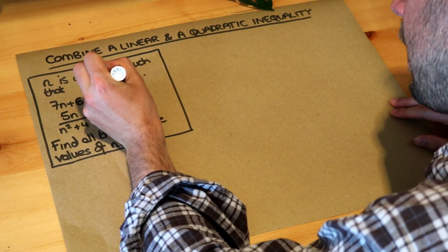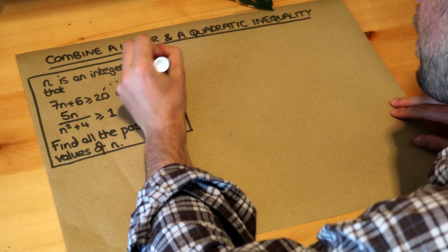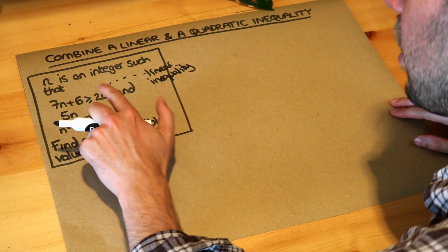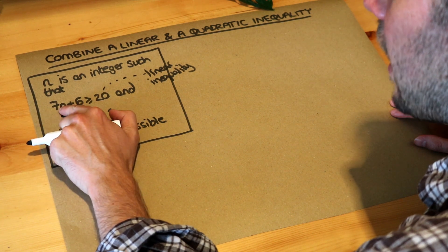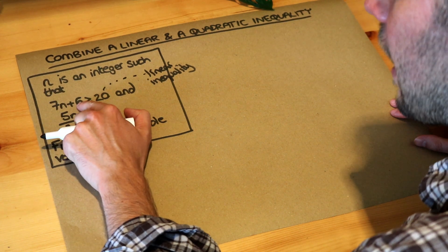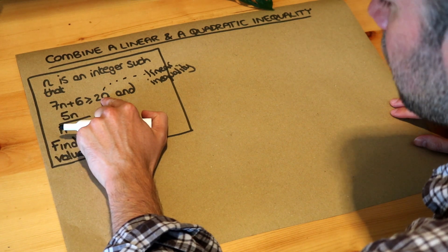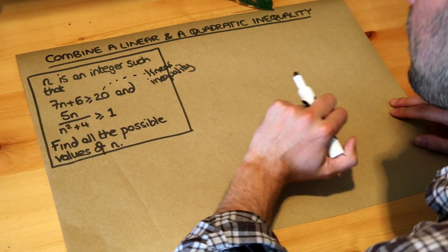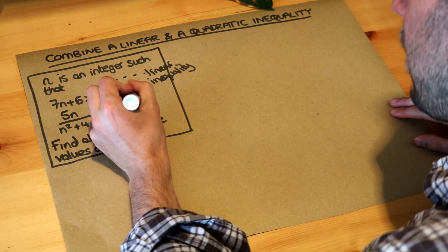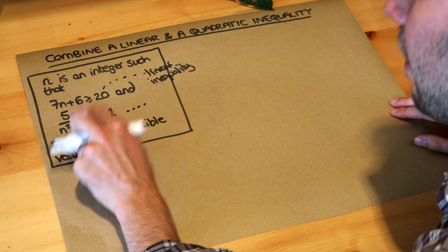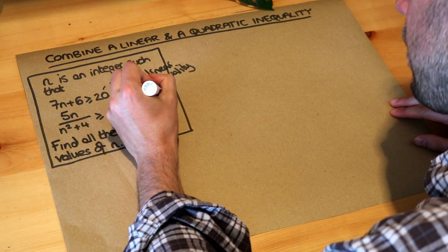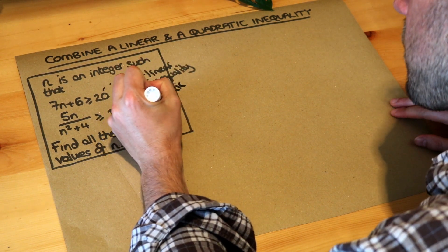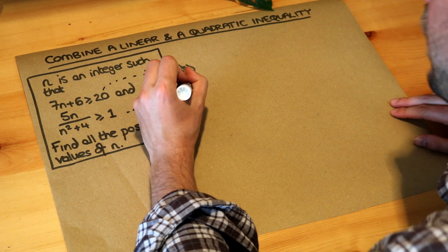Now what we need to do first is to solve each of these two inequalities. This thing here is known as a linear inequality. The reason it's linear is partly because there's no squared term, but more simply it's where you have only n terms or x terms and constant terms. And this is a quadratic inequality because you've got an n squared term.